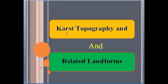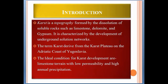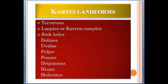Today we talk about karst topography and related landforms. Karst is a topography formed by the solution of soluble rocks such as limestone, dolomite, and gypsum. It is characterized by the development of underground solution networks. The term karst is derived from the karst of refuge on the Adriatic coast of Yugoslavia. Ideal conditions for karst development are limestone terrain with low permeability and high annual precipitation.